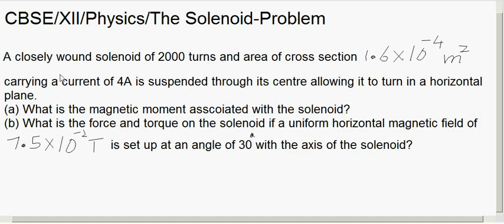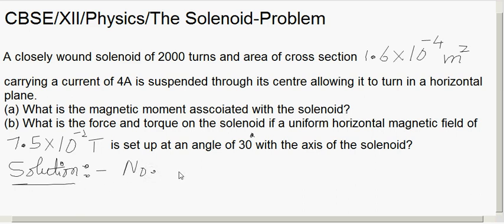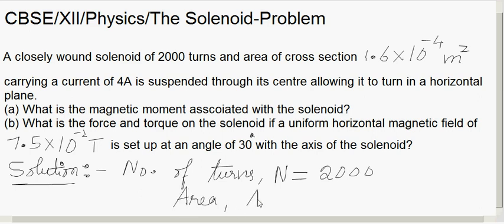If a uniform horizontal magnetic field of value 7.5 into 10 to the power minus 2 tesla is set up at an angle of 30 degree with the axis of the solenoid. Now let us list out the given things. Number of turns N is 2000, area of cross-section A is 1.6 into 10 to the power minus 4 meter square, and current I is equal to 4 ampere.